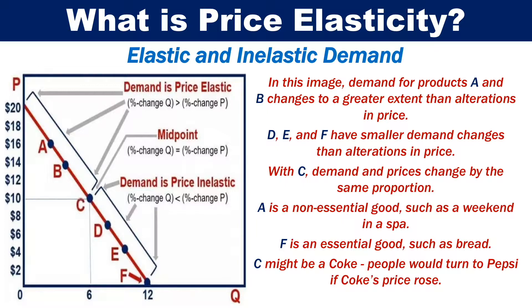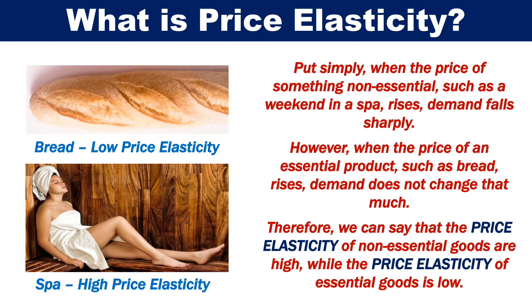People would turn to Pepsi if Coke's price rose. Put simply, when the price of something non-essential, such as a weekend in a spa, rises, demand falls sharply. However, when the price of an essential product, such as bread, rises, demand does not change that much. Therefore, we can say that the price elasticity of non-essential goods is high, while the price elasticity of essential goods is low.